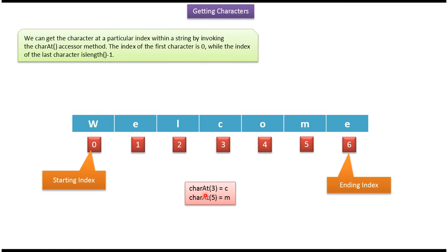Using the charAt method, we can get the character at a particular index. At index position 3, 'c' is there, so the charAt method returns 'c'.